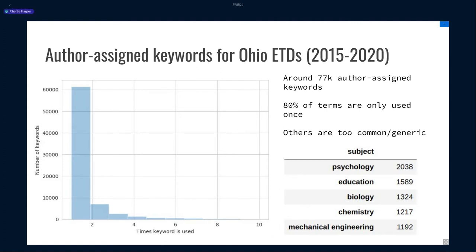If we take a quick look at ETDs published in Ohio between 2015 and 2020, this problem really comes to the fore. We have about 30,000 dissertations that are part of OhioLINK, our state's institutional repository for ETDs, and about 77,000 unique author-assigned keywords. Of these, 80% of the keywords are used only one time — so if you find a dissertation's keywords, they're not actually going to help you link to any other relevant dissertations. About 90% are used twice or less. On the other side, some keywords are used thousands of times and tend to be extremely generic. If we see 'psychology' linked to over 2,000 dissertations, that keyword doesn't help you either. The sweet spot is a dissertation linked to 10 to 20 other relevant dissertations to help you discover new literature.